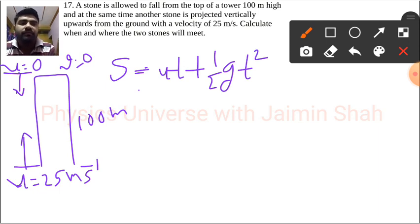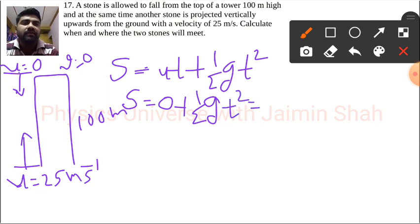For the first dropping one, we don't have u, that's why it's 0. We only have half, and here G we are dropping in the downward direction, that's why G we have to take as positive, so G into t squared. So we can write 5t squared.